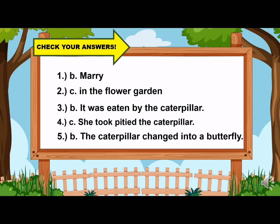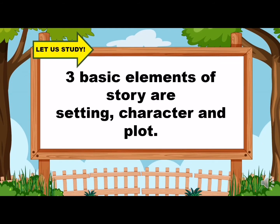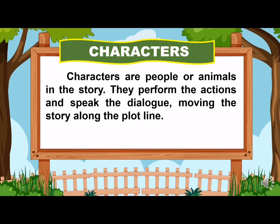Now, let us study. The story you've heard tells about Mary and the caterpillar that she found in the flower garden. A story is composed of three basic elements, namely setting, characters, and plot. Characters are people or animals in the story. They perform the actions and speak the dialogue, moving the story along the plot line.